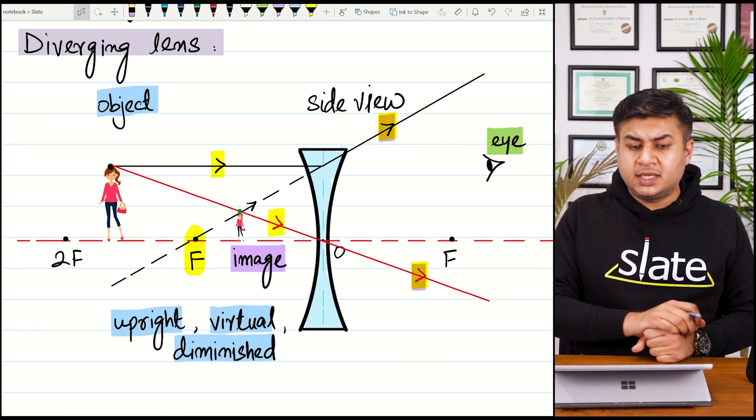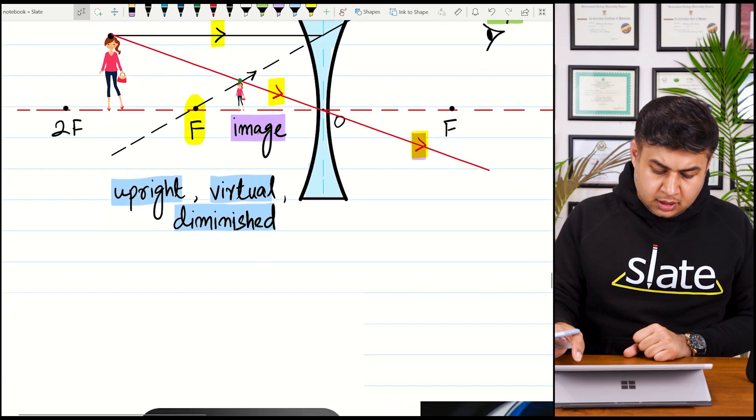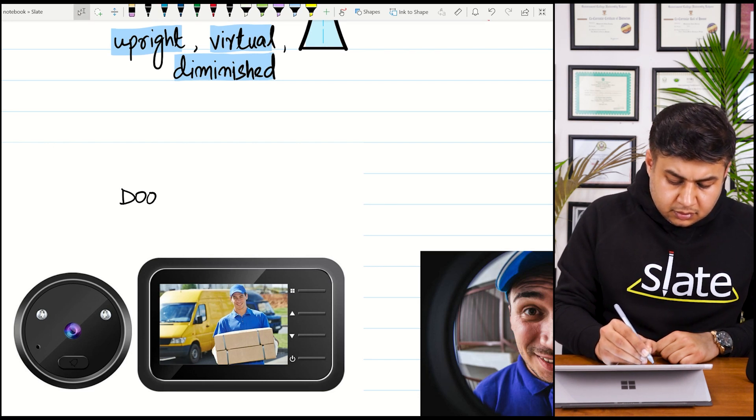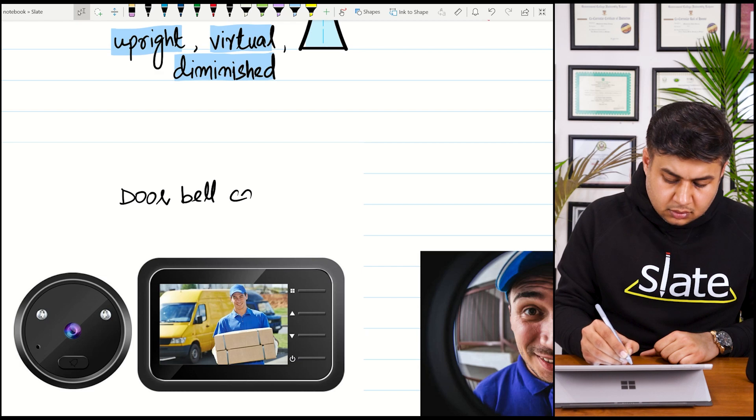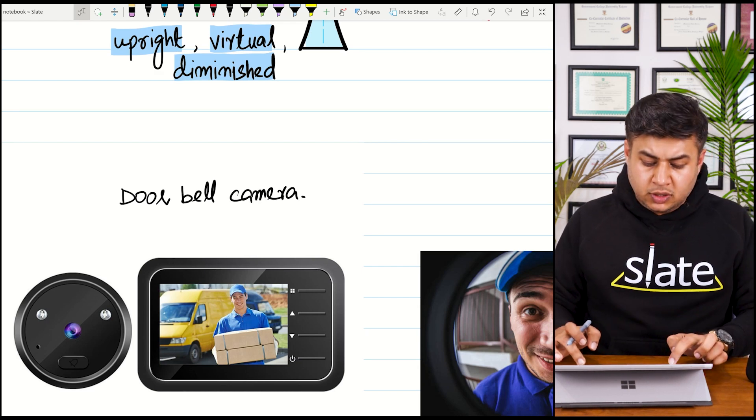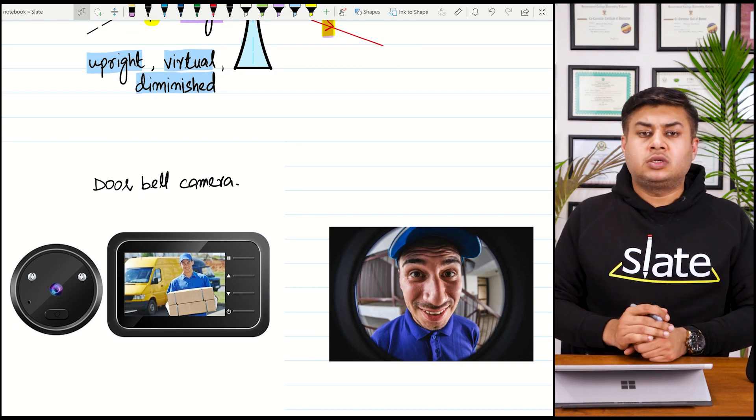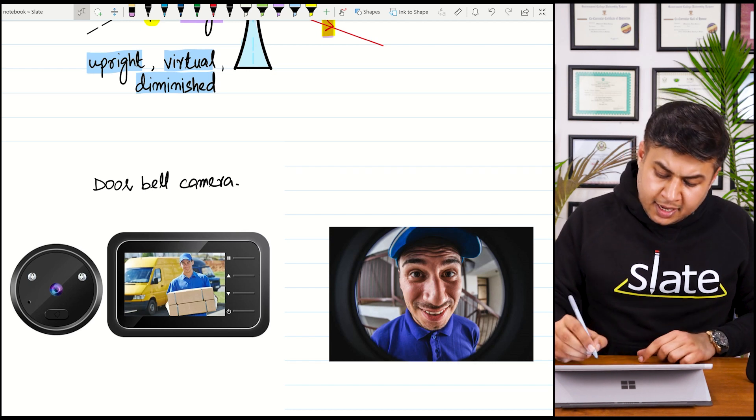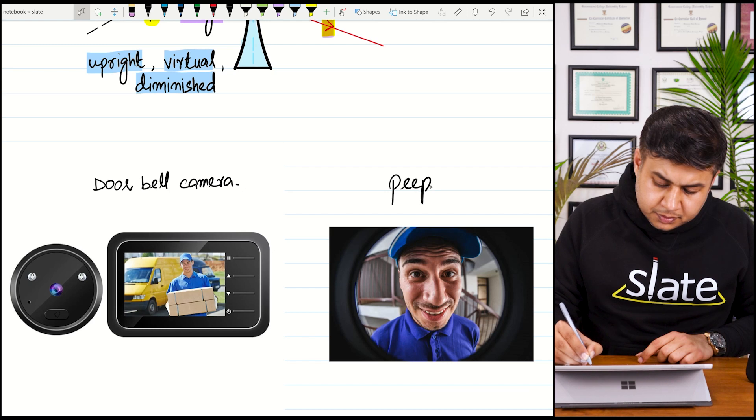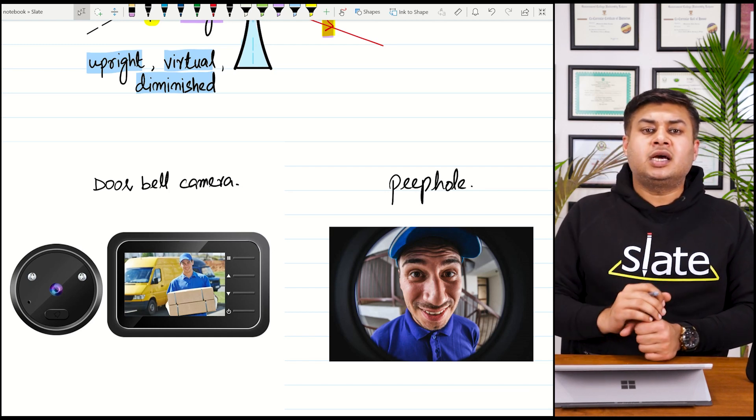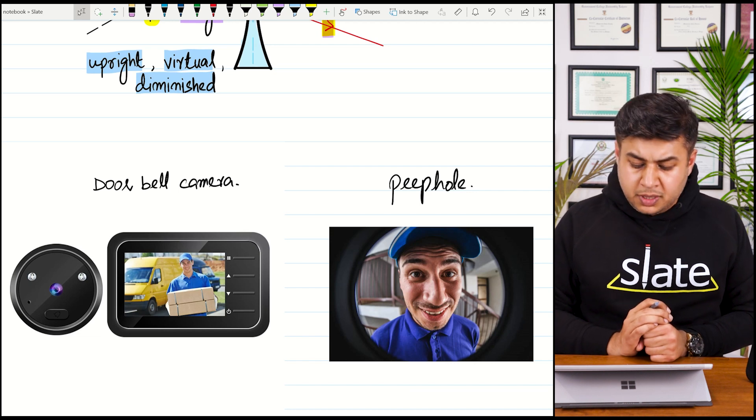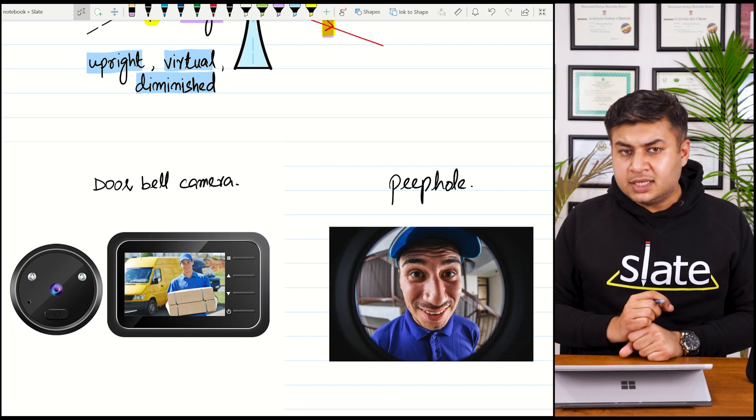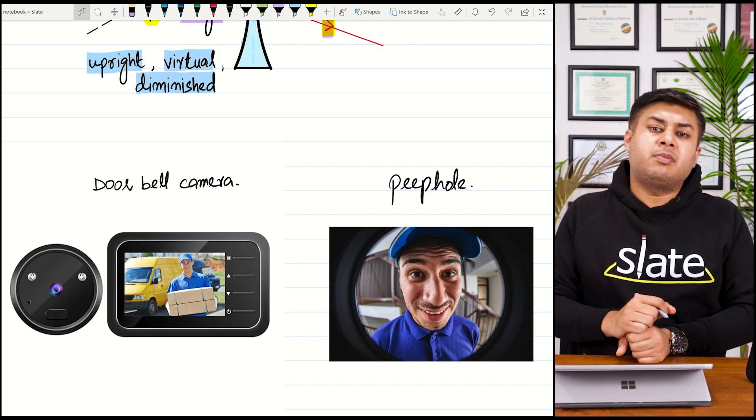So what could be the possible use of this case? When you use a door camera or doorbell, the image formed is upright, virtual, and diminished. This is also used in peephole, the lens on the door to view the outer object or person. So this was the ray diagram of diverging lens, and these are the two uses which you can remember for the diverging lens.